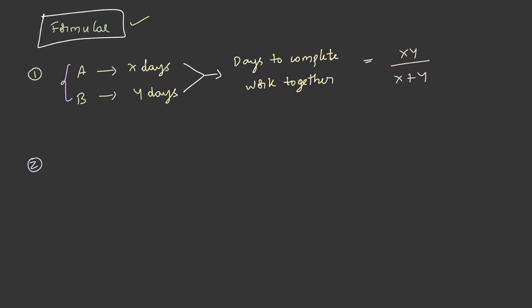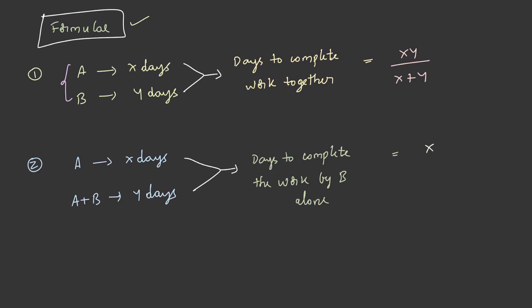In the other case, if A takes x days to finish the work and A plus B together take y days to finish the same work, then the days to complete the work by B alone will be xy / (x − y).